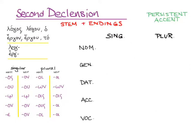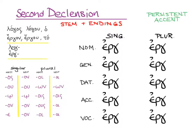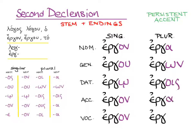Now let's do the same for ergon. Here are all the stems laid out, and now let's add the endings: ergon, ergou, ergō, ergon, ergon, erga, ergōn, ergois, erga, and erga. The accents try to stay an acute on that epsilon, which they can do on all of the forms. So: ergon — deed; ergou — of deed; ergō — for deed; ergon — deed as direct object; ergon — deed in vocative. In the plural: erga — deeds; ergois — for deeds; erga — deeds; and erga — deeds.